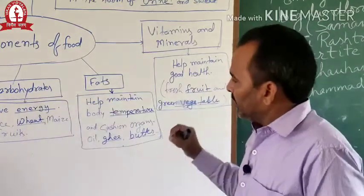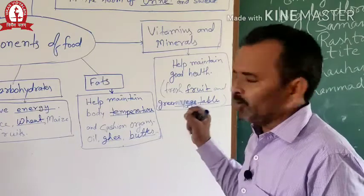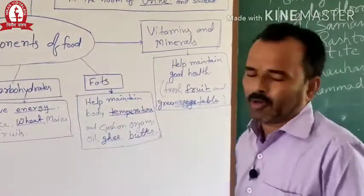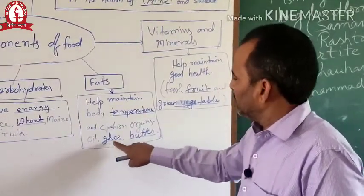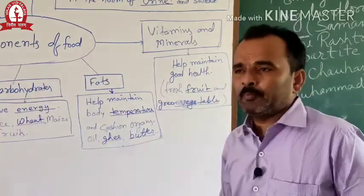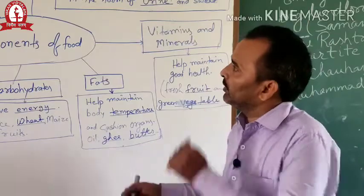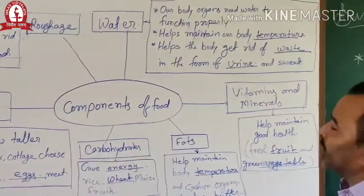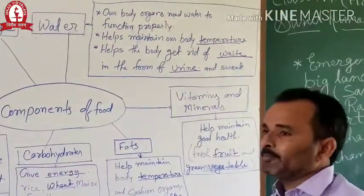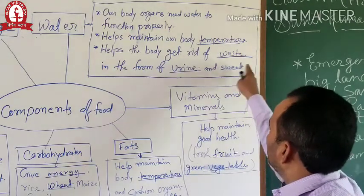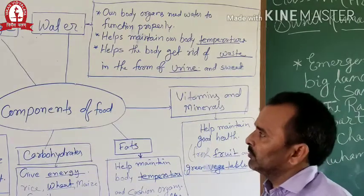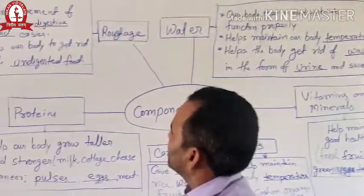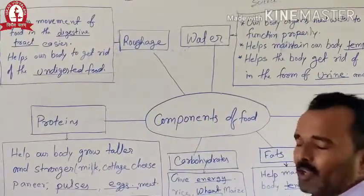Fats are important for our body. We need a small amount. It helps maintain body temperature and supports some important organs. Oil, ghee, and butter are the main sources of fat. Water is essential — our body organs need water to function properly. It maintains body temperature and helps get rid of waste in the form of urine and sweat. Roughage makes movement of food in the digestive tract easier and helps the body get rid of undigested food.